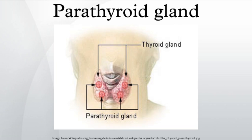The two parathyroid glands on each side which are positioned higher are called the superior parathyroid glands, while the lower two are called the inferior parathyroid glands. Healthy parathyroid glands generally weigh about 30 mg in men and 35 mg in women. These glands are not visible or able to be felt during examination of the neck.